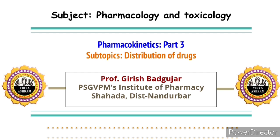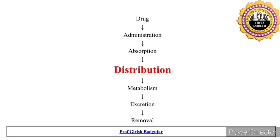In previous sessions, we discussed that after administration, a drug undergoes processes like absorption, distribution, metabolism, and excretion — these four processes are called pharmacokinetic processes. We have already discussed the first pharmacokinetic process, absorption, which means entry of the drug molecule into blood circulation. After entry into blood, the drug molecule gets distributed to various body parts.